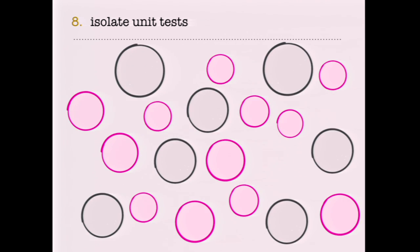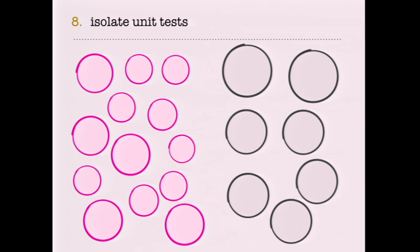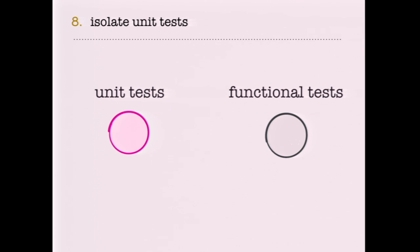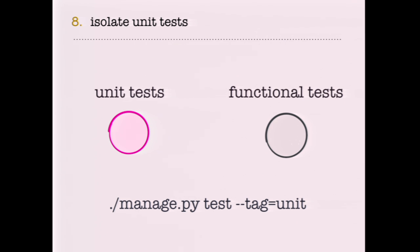Isolate unit tests. Your test suite might be a mix of somewhat unit tests, functional tests, and integration tests all in one place. It would be more useful and would allow a faster feedback loop if we separate unit tests from the rest, because unit tests are very fast and we can run them very often. One way is to use SimpleTestCase for unit tests and tag them with a special label. Even better, make them simple unittest or pytest cases with no idea what Django is, and write more of them. At the same time, don't neglect functional tests — that's where we validate the contracts between the units.